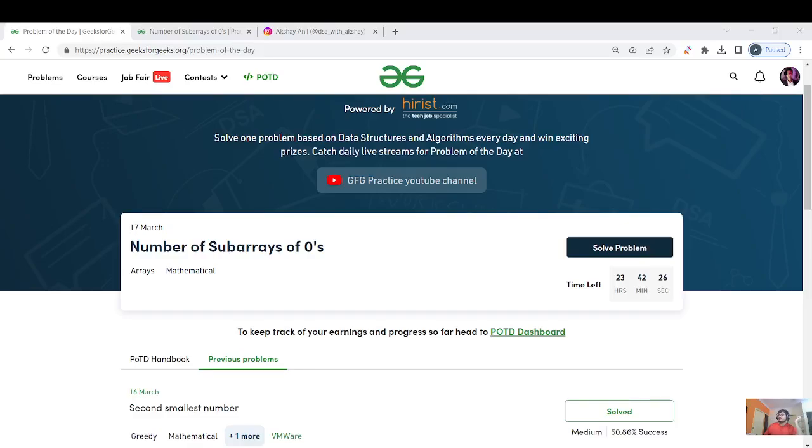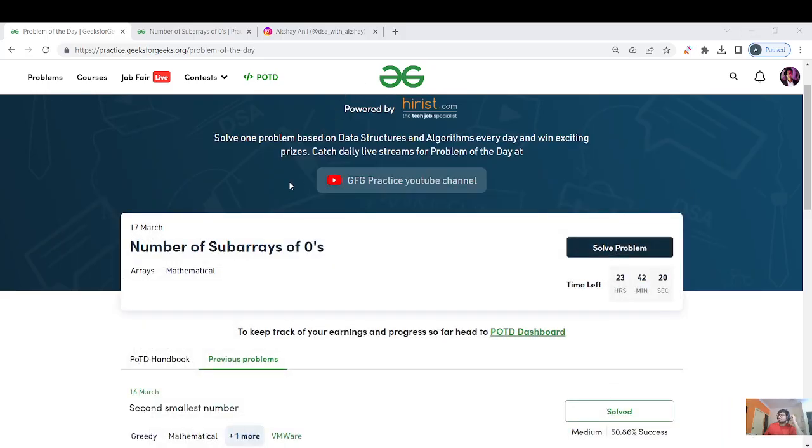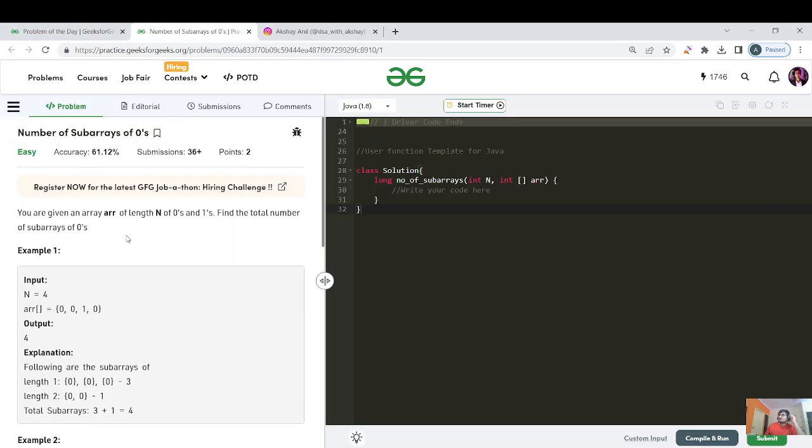Hello everyone, I'm Akshay and welcome back to the channel with the GFG problem of the day, day 147. Let us read the question, think of multiple approaches, and then go ahead with the coding section. Today's question name is number of subarrays of zero and the tags given are arrays and mathematical.